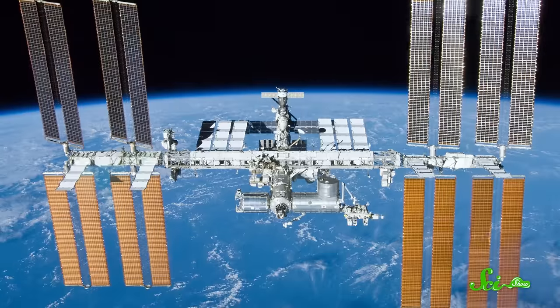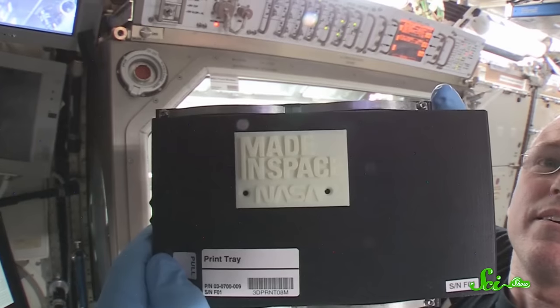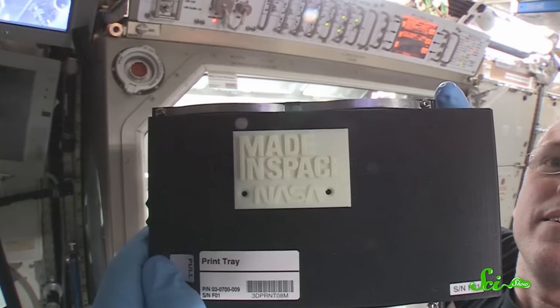So scientists are using 3D printing to develop all kinds of new ideas here on Earth. But it's also helping us explore space. In fact, there's a 3D printer on the International Space Station right now. And in 2014, astronauts used it to 3D-print objects in space for the first time ever.